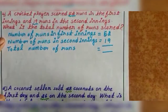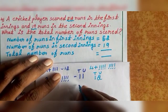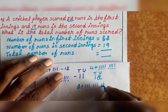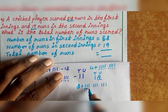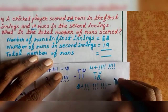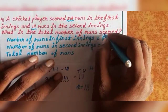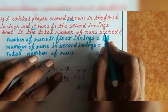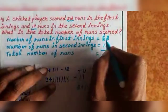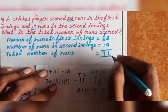Add now. First add units: 2 plus 9. Draw 9 lines and count now from 2: 3, 4, 5, 6, 7, 8, 9, 10, 11. So 2 plus 9 equals 11. In 11: 1 ten and 1 unit. Write unit 1 first. Balance 1, you can transfer to the next number. So 5 plus 1 equals 6, then 6 plus 1 equals 7. Total 71 runs.